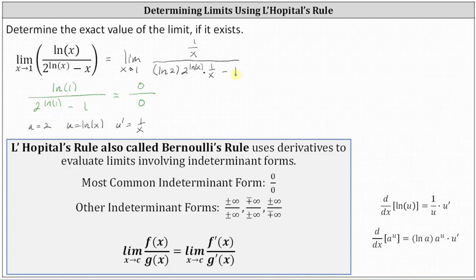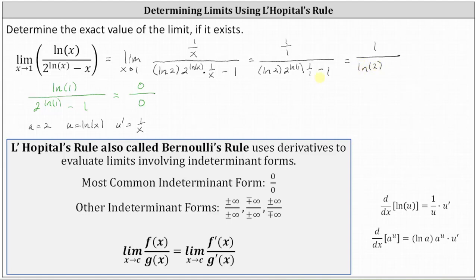The value of this limit is the same as the value of the original limit. Now let's evaluate this limit by performing direct substitution. Subbing in 1 for x, we have 1 divided by 1, all divided by natural log 2 times 2 to the power of natural log 1 times 1 divided by 1, minus 1. Simplifying, we have 1 divided by — in the denominator, natural log 1 is 0, 2 to the 0 is 1, so we have natural log 2 times 1 times 1, which is natural log 2, and then minus 1.